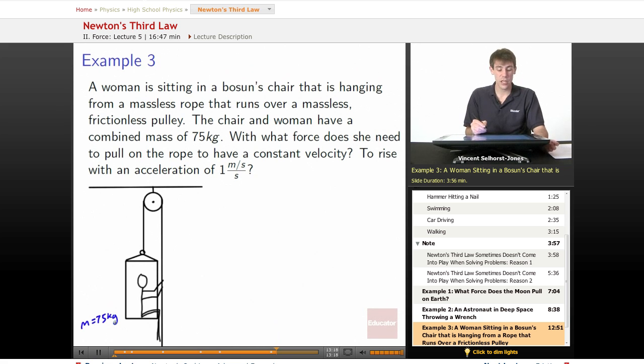With what force does she need to pull on the rope to have a constant velocity? And with what force does she need to pull to have an acceleration of 1 m/s²?